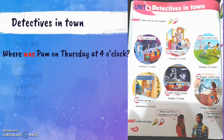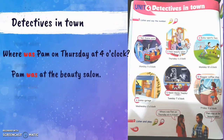Where was Pam on Thursday at 4 o'clock? Can you tell me? Pay attention to the red word: 'was.' If you see 'was,' we are talking about the past. Pam was at the beauty salon. When? On Thursday. At what time? At 4 o'clock.